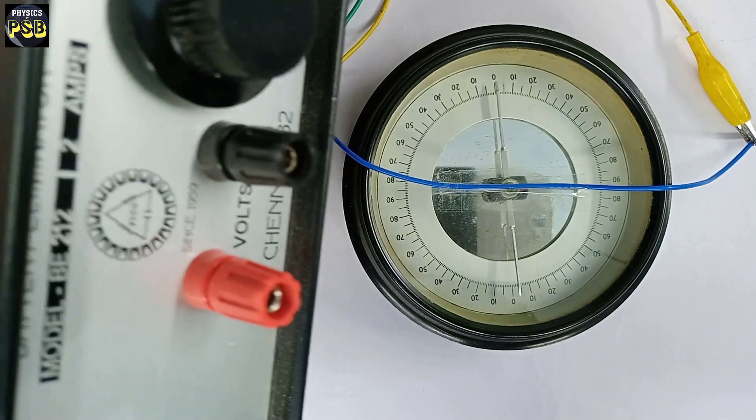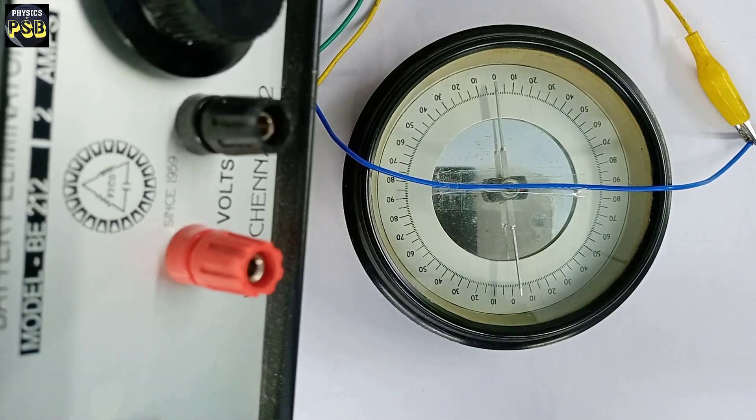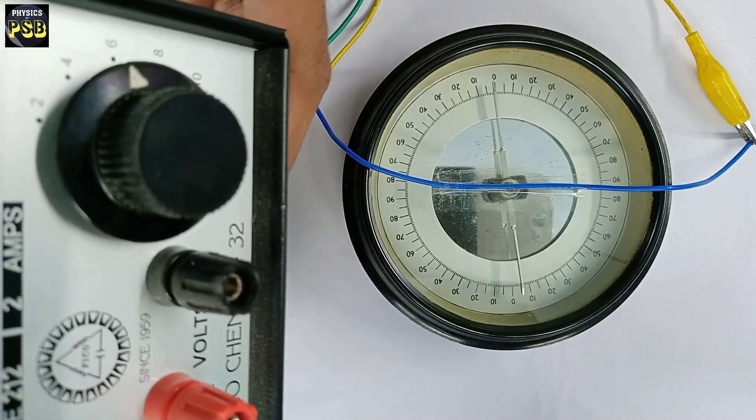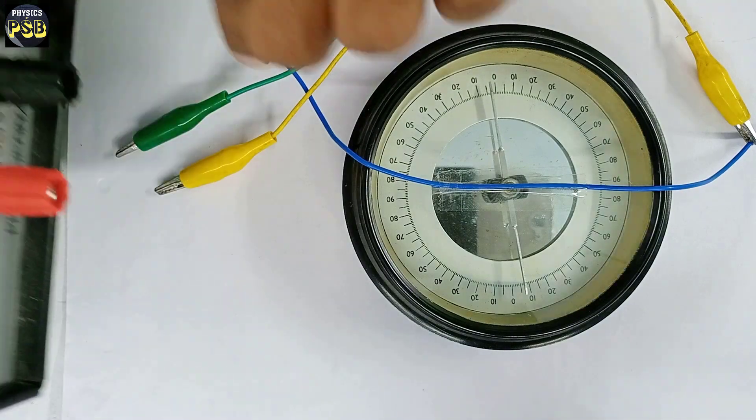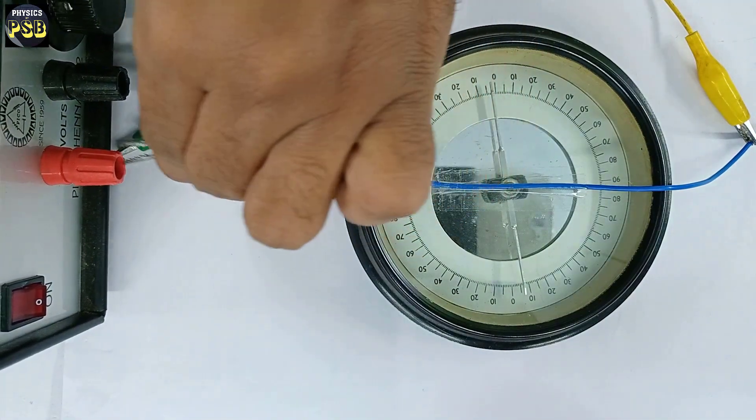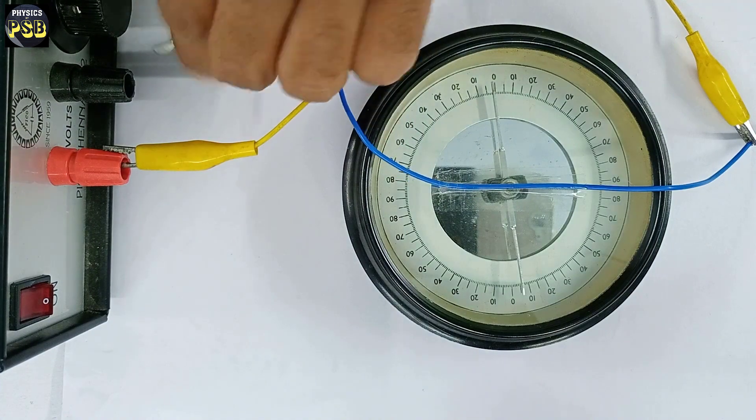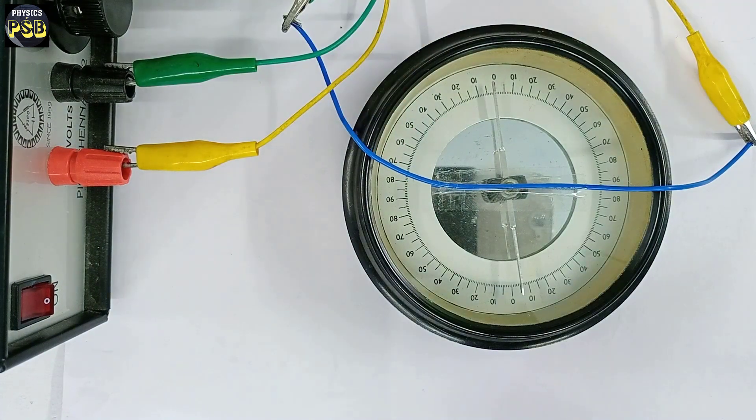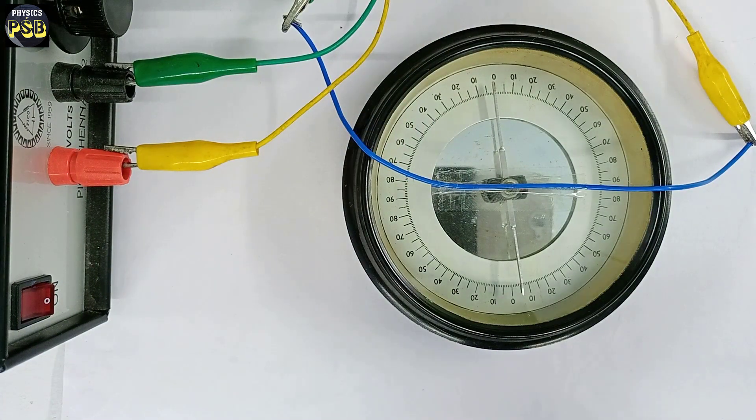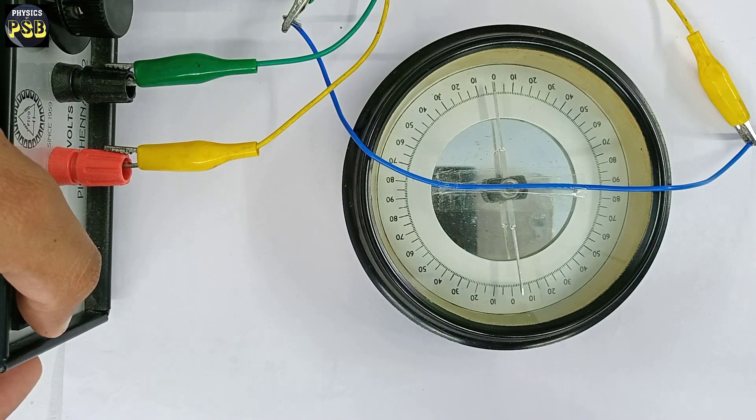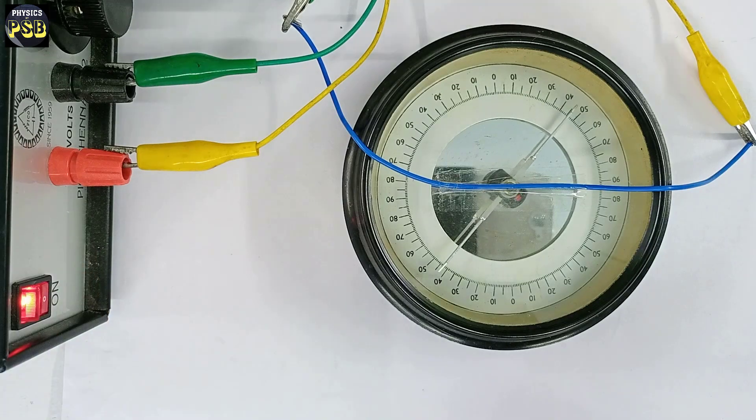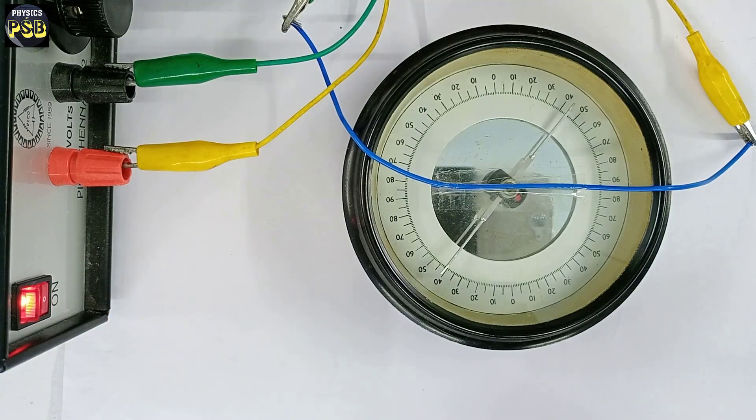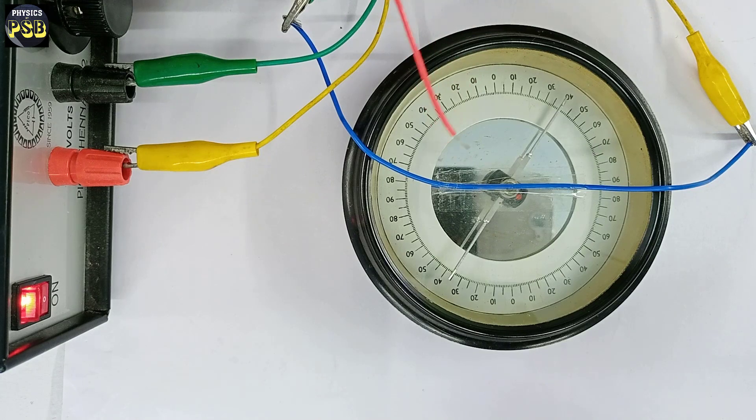Current of around 2 ampere and voltage here fixed as 6 volt. I turn on the supply. As you can see the deflection has increased. Now this shows that the strength of magnetic field has increased with increasing the strength of current through this wire. This clearly demonstrates Biot-Savart law.